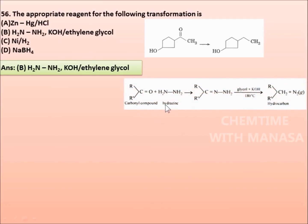We can see the reaction also. Carbonyl compound when reacts with hydrazine, we get hydrazone which reacts with potassium hydroxide in ethylene glycol gives hydrocarbon. Or simply, carbonyl group is converted into CH2 group. So for this reaction, option B will be the appropriate reagent.